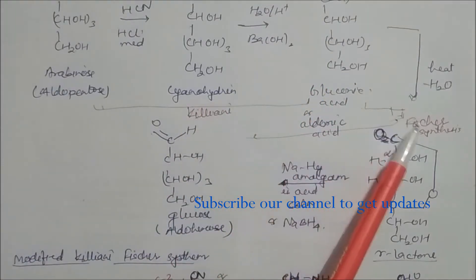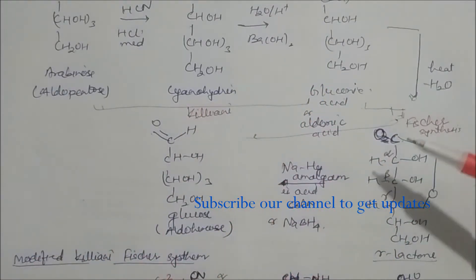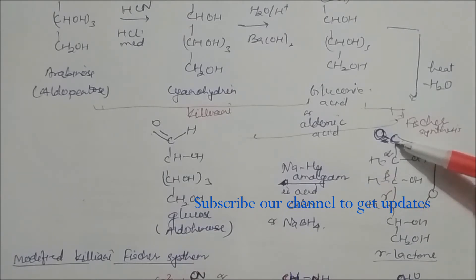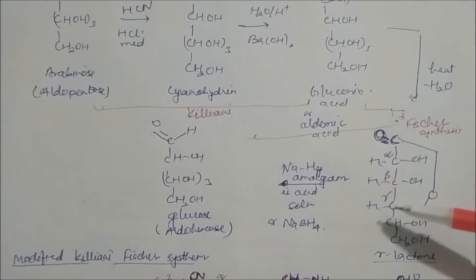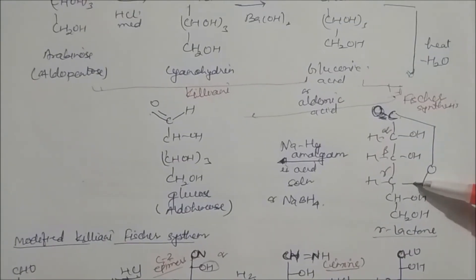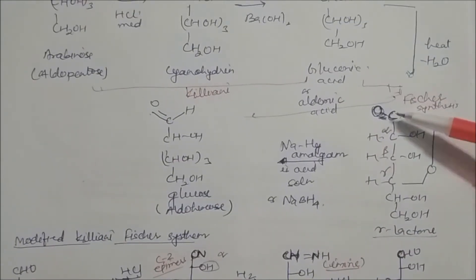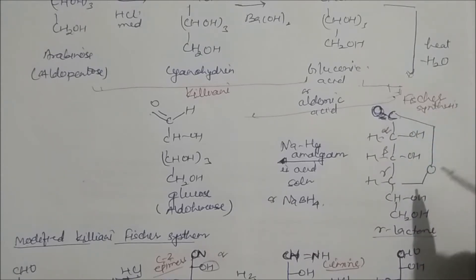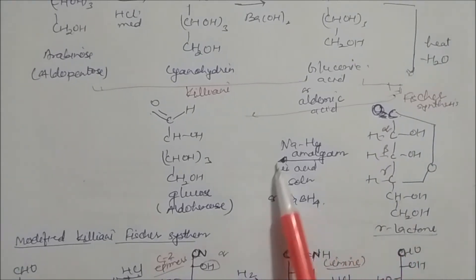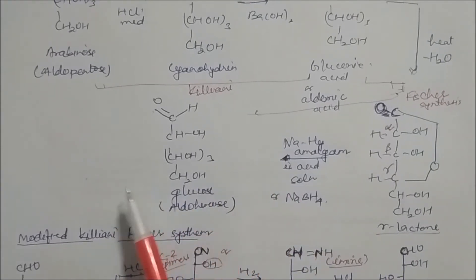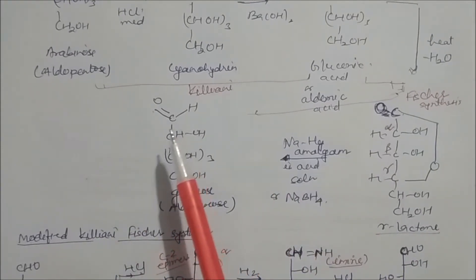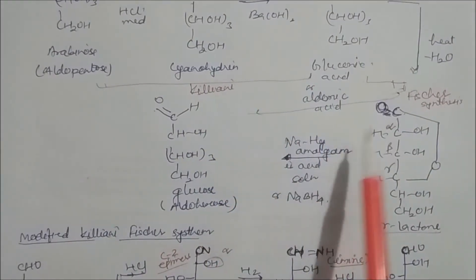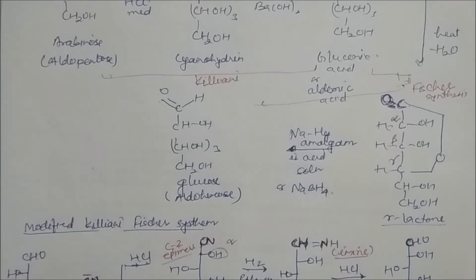To clarify the lactone formation: starting from the aldehyde and carboxylic group, we label alpha, beta, and gamma carbons. The hydrogen from gamma position allows the oxygen to attack the carboxyl carbon, forming the five-membered gamma-lactone ring. This is a very important step. In this way we achieve conversion of pentose to hexose sugar.